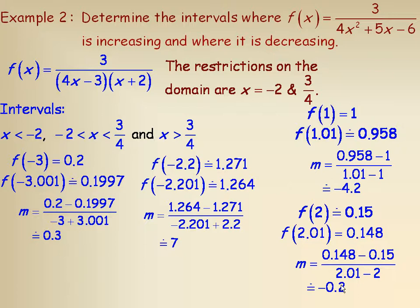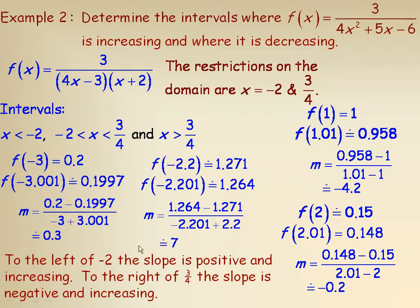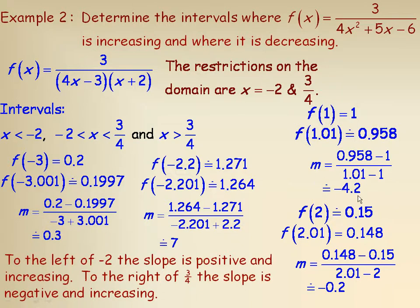To summarize: to the left of −2, the slope is positive and increasing — it went from 0.3 near x = −3 up to 7 near x = −2.2. To the right of 3/4, the slope is negative but increasing numerically — it went from −4.2 near x = 1 to −0.2 near x = 2. Note that −0.2 is a larger number than −4.2, but −4.2 is actually the steeper slope.